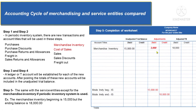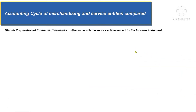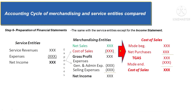Now let's go to step 6, which is the preparation of financial statements. The main difference between service and merchandise entities in terms of financial statements is their income statements. The income statement of merchandise entities is composed of two types of expenses: cost of sales and operating expenses. So: net sales less cost of sales gives gross profit, less operating expenses equals net income. This net income is added to the beginning capital balance together with owner investments.